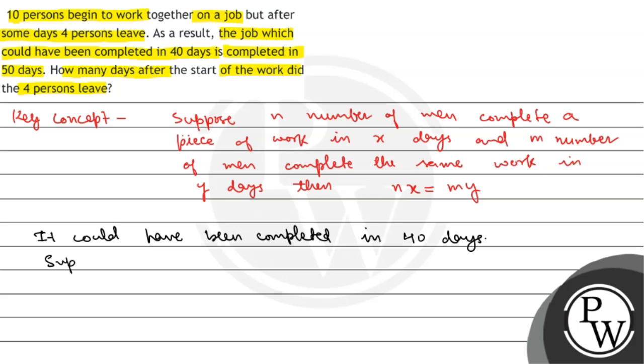So we will say that suppose four men left after x days. This means how many days will be left? So, remaining days or left days will be 40 minus x.